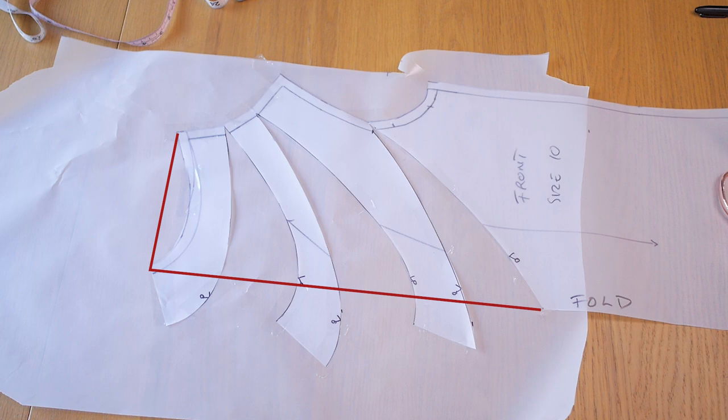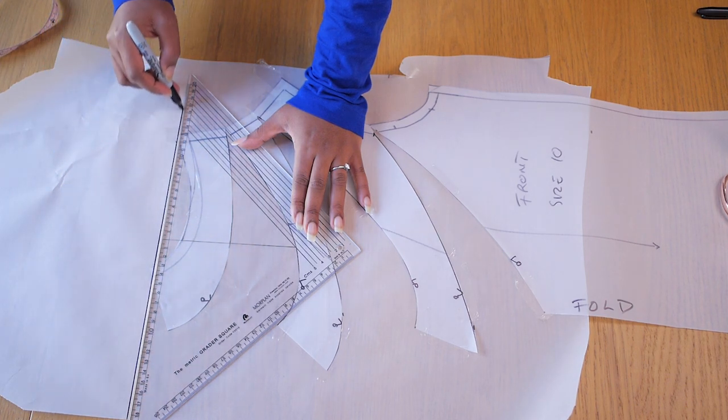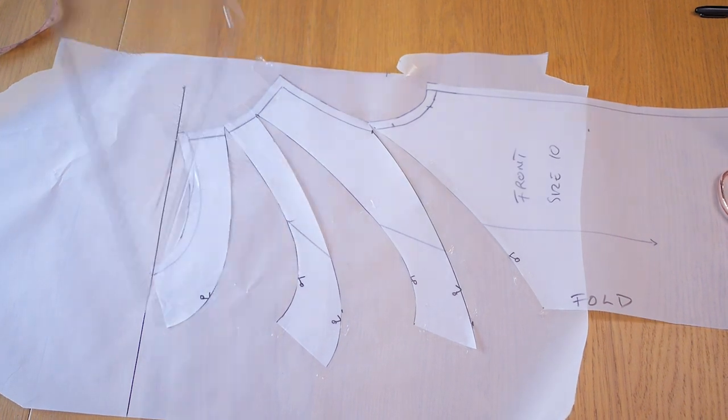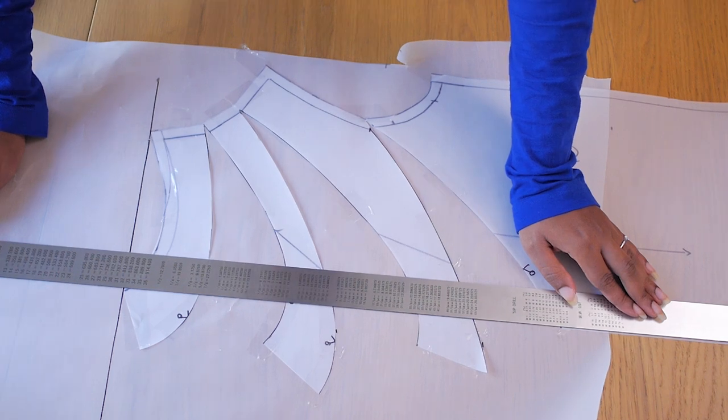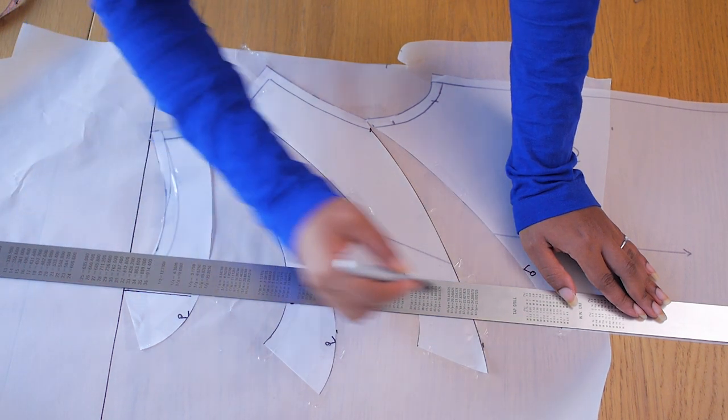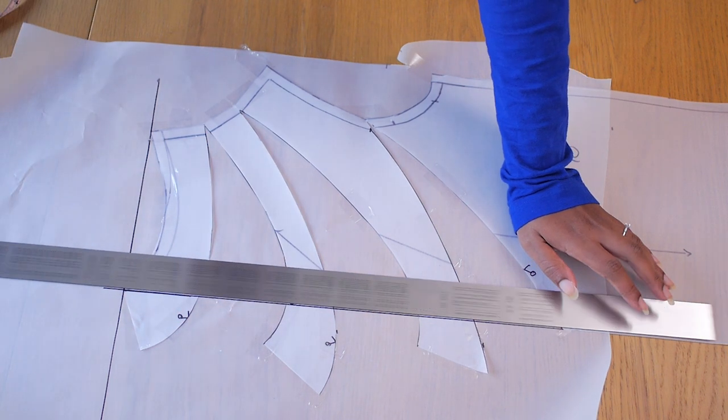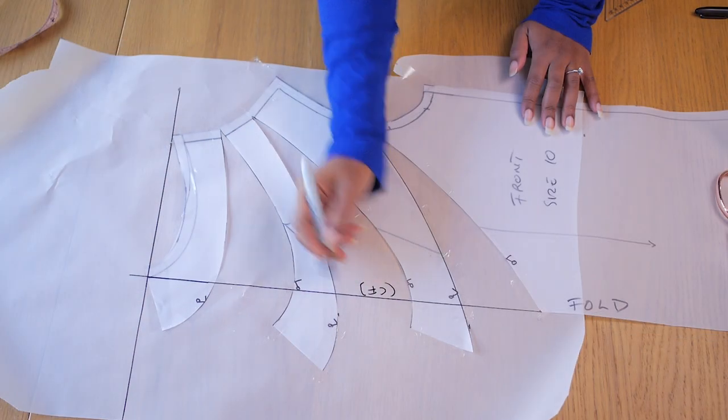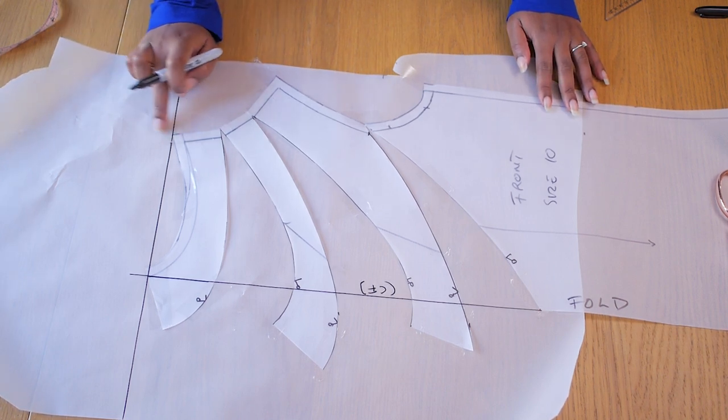So the next thing you need to do is we need to connect the shoulder points to the original center front line. And when you do that you find that you would actually cut away or rule away some of the panels along that center front edge as you can see here. So this doesn't really matter because there is still enough room added into the pattern through the panels that we've spread from the bottom all the way to the top. So the next thing you need to do after this is you need to add a little bit on top to accommodate a folded facing that is already attached to this pattern.